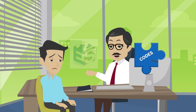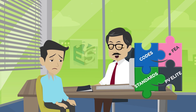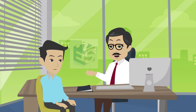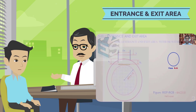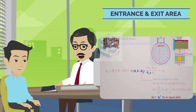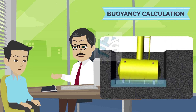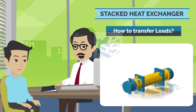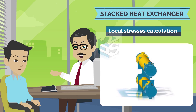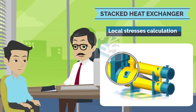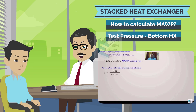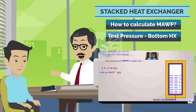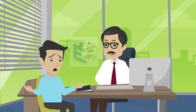In today's world, without having knowledge of codes, standards, design software, and FEA, one can never become a complete design engineer. There are a lot of other important calculations that need to be done manually or partially in software — for example, longitudinal baffles design, entrance and exit area calculations for heat exchangers, buoyancy calculations for underground vessels, in stacked type heat exchanger design how to transfer the loads, how to calculate local stresses developed in the top saddle to bottom heat exchanger junction, how to calculate MAWP and test pressure for the bottom heat exchanger. Many such things need to be designed with better understanding of the code. I realize that I need to have a thorough knowledge about the code to be a good designer.